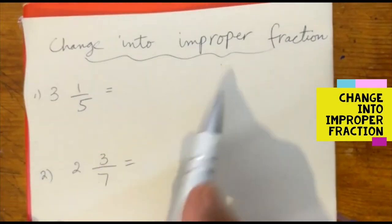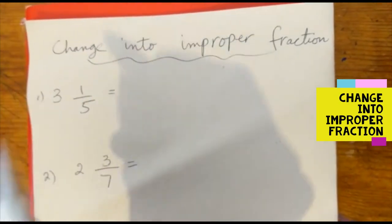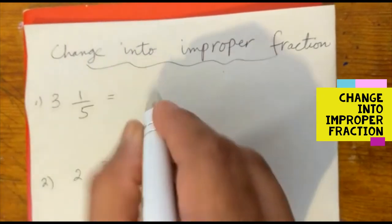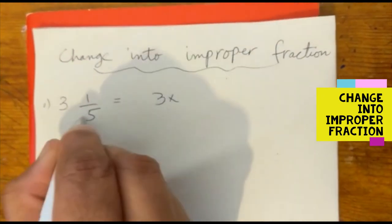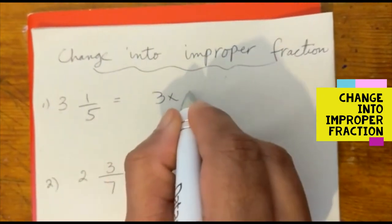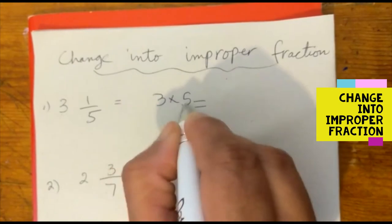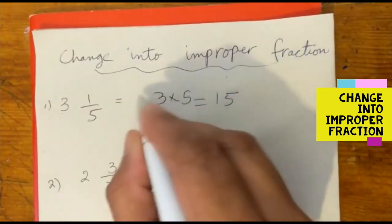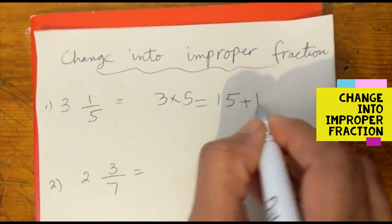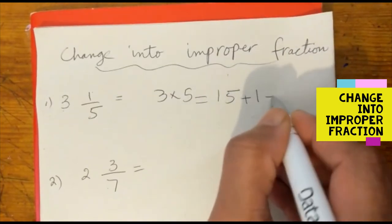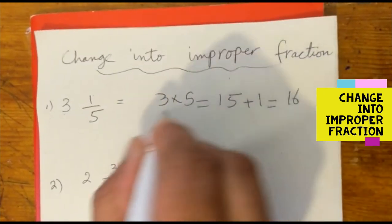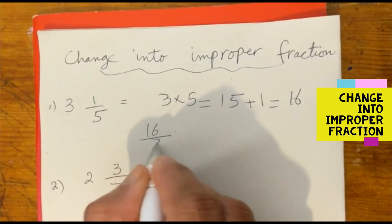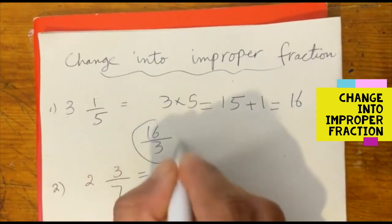Change into improper fraction. What do we need to do? 5 multiply by denominator — answer is 5 times 3 is 15 — and numerator we will add plus 1, so answer will be 16. 16 over 3. Question complete.